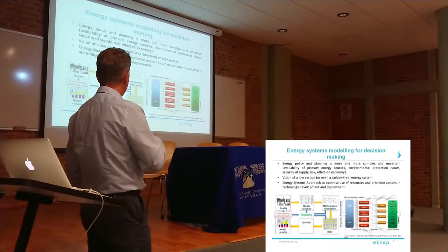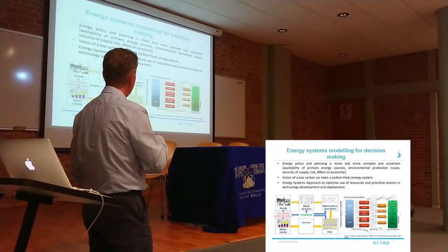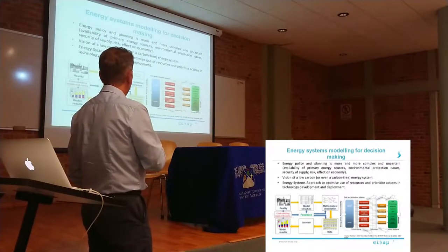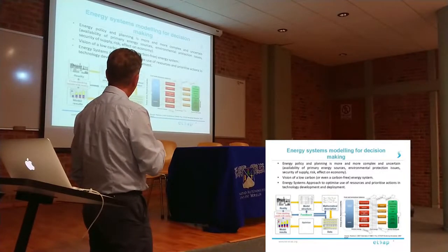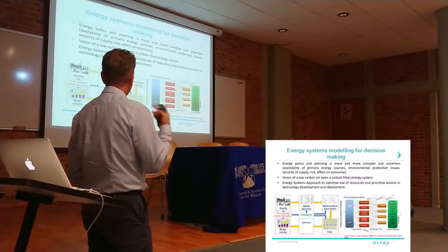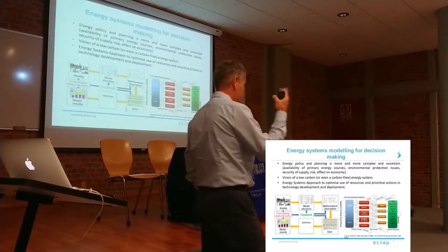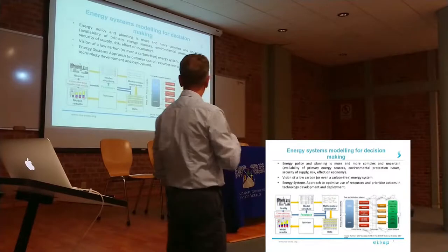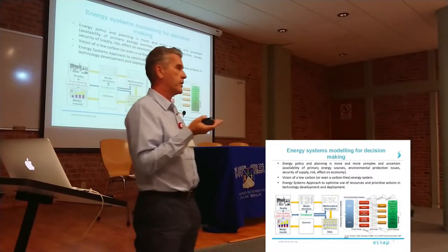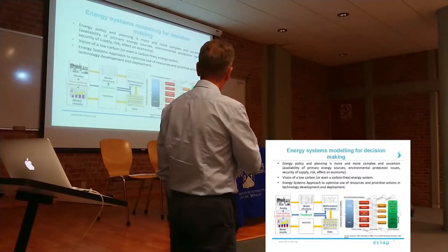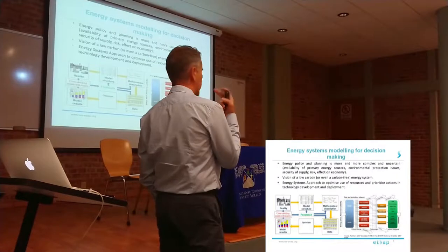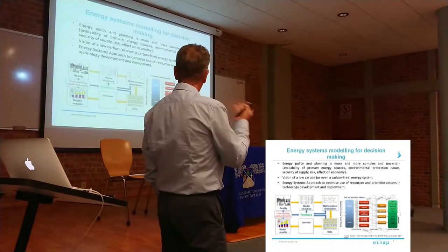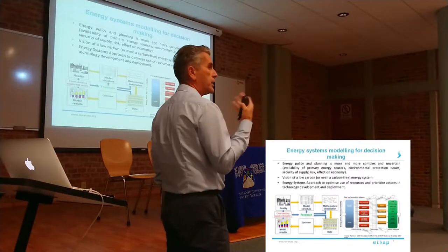The idea is that you have the reality and then you try to represent it within the model — turning it into a mathematical description, filling in the data, optimizing, and getting model results. But the feedback part is crucial, because whatever comes out of the model is not necessarily the answer. You need to sit down and discuss: why do these results come out? Do they depend on the inputs or the mathematical description? All this feedback should loop until you reach meaningful results usable in policy making.